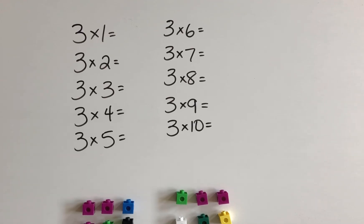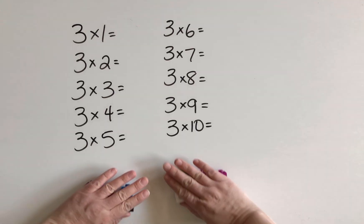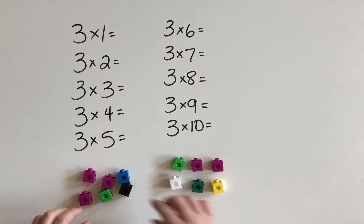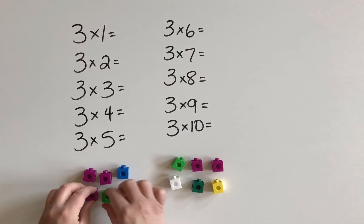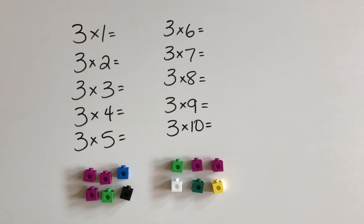Let's discuss what we can use for a strategy when we multiply a number by three. When we multiply by three, we can start out by thinking about the double of a number — that's what we learned when we learned how to multiply by two. Then when we multiply by three, we just add one more group.